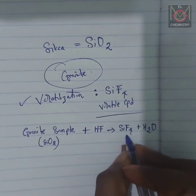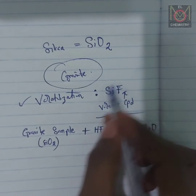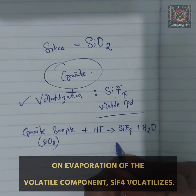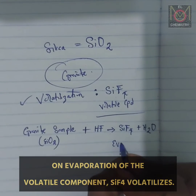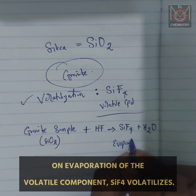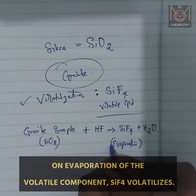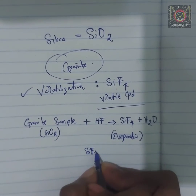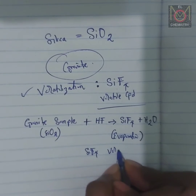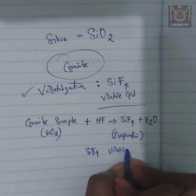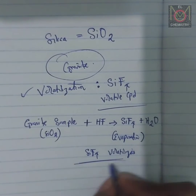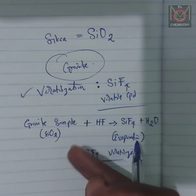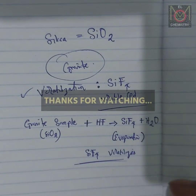As you can see, we've derived and produced silica tetrafluoride. On evaporation, silica tetrafluoride volatilizes, and in that way you've separated silica from the granite sample.